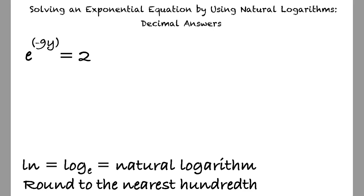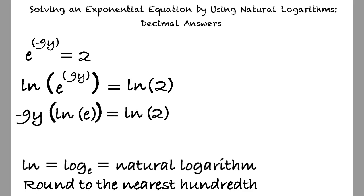We take the natural log of both sides to yield ln of e raised to the negative 9y equals ln of 2. Using the logarithm of a power property, we can rewrite the equation as negative 9y multiplied by the ln of e equals ln of 2.